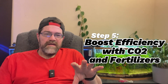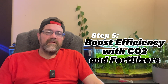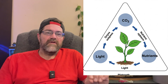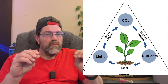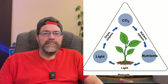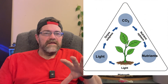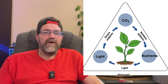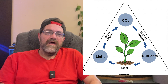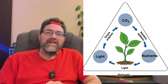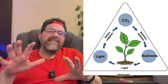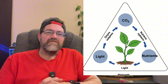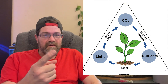Here's the secret: light alone isn't enough. To maximize plant growth, you need to pair your lighting with CO2 injection and liquid fertilizers. Think of it like a triangle — light, CO2, and nutrients. CO2 injection can seem intimidating, but it's a game changer. If you're not ready for a full setup, try using liquid carbon supplements as a starting point. And don't forget to dose fertilizers regularly to provide essential nutrients like iron and potassium.